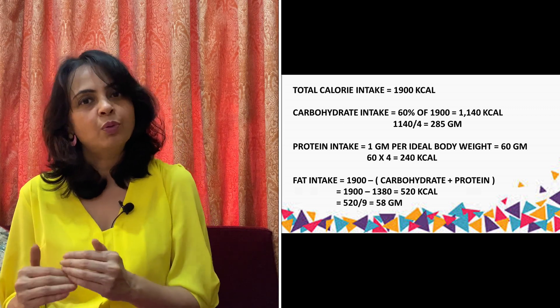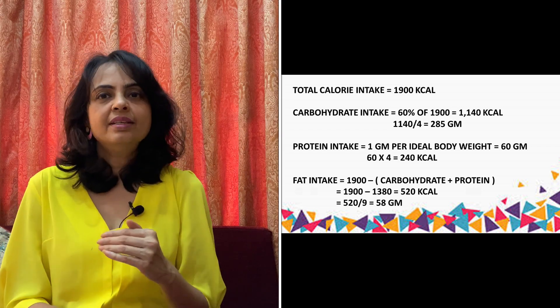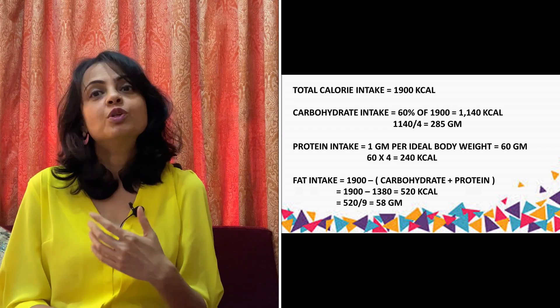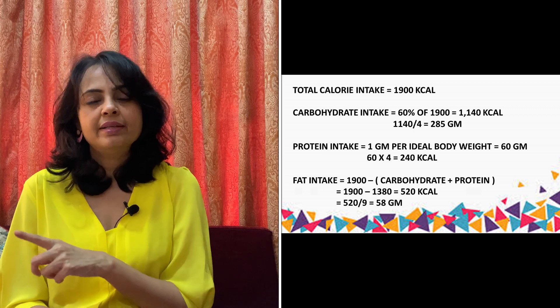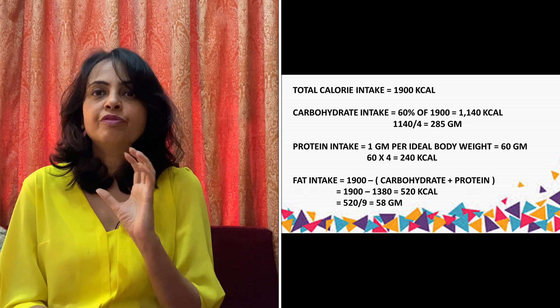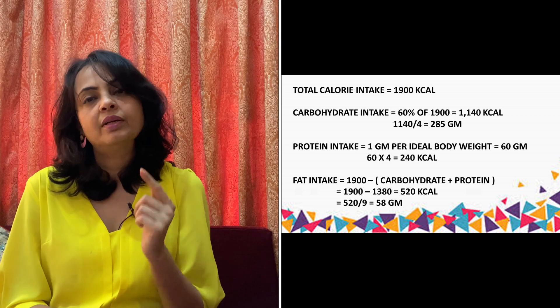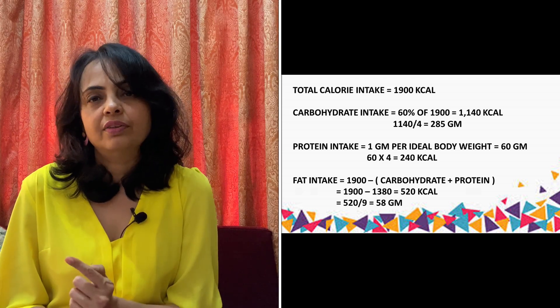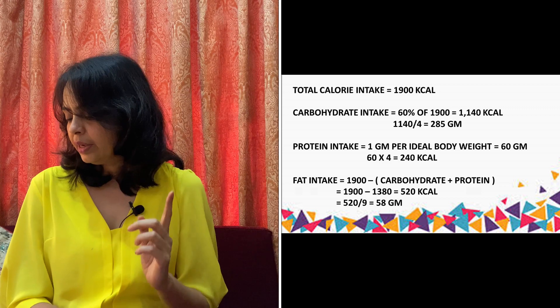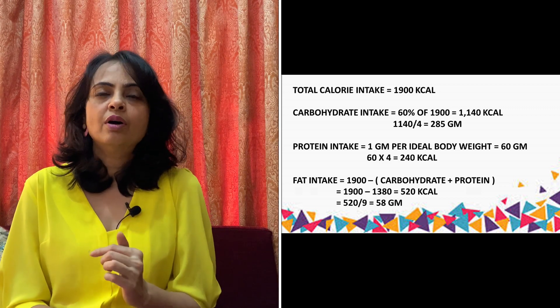Now we calculate the calories required from fats. We add the calories from carbohydrates and proteins: 1140 plus 240 equals 1380. We subtract that from the total: 1900 minus 1380 equals 520 kilocalories needed from fats. Going back to the formula — since 1 gram of fat gives 9 kilocalories, 520 calories comes from approximately 58 grams of fat.